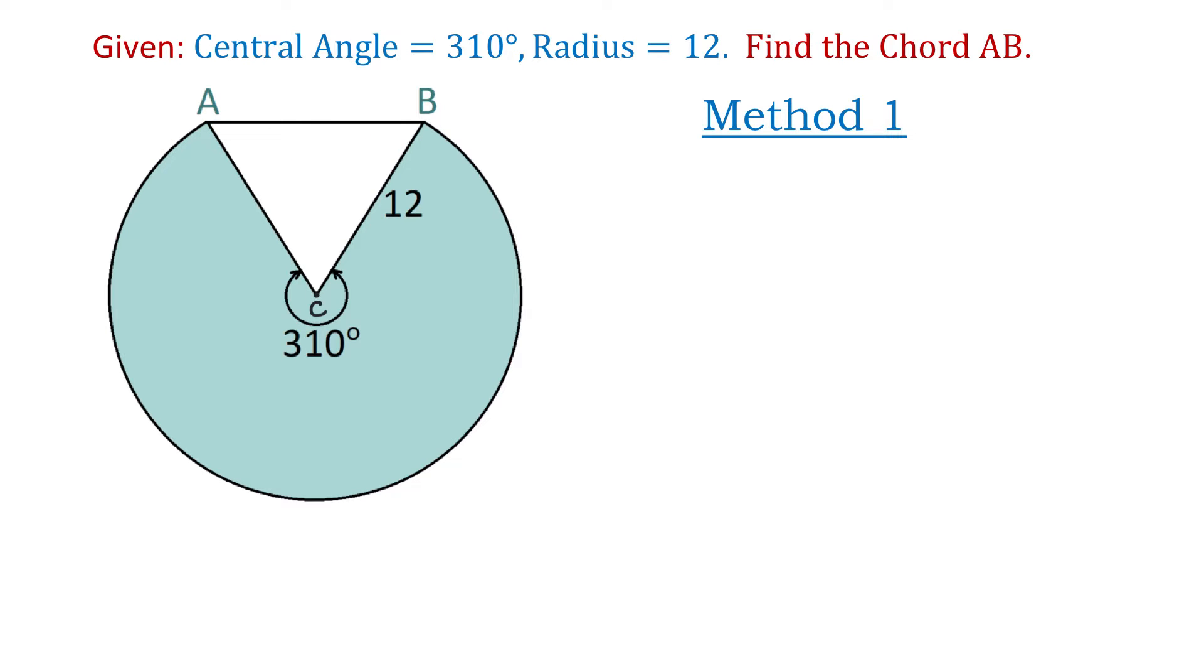We will solve this problem using two different methods. Let's start with the first one. Point C is the center of this circle and the triangle ACB is an isosceles triangle because the sides AC and BC are equal and each one measures 12 units.